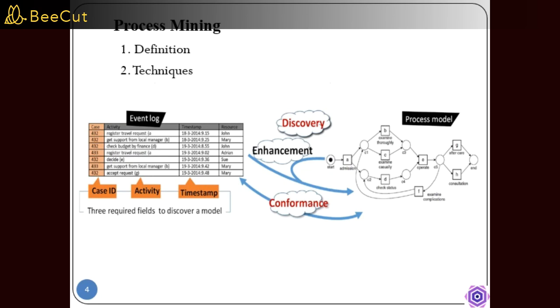let's start by defining process mining as a discipline. Process mining, as a discipline, combines management, business process, and data mining notions. Its objective is to discover, monitor and improve real processes by extracting knowledge from event logs. An event is the starting point of process mining as shown in this figure.